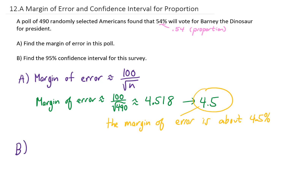Now let's find the 95% confidence interval for this survey. Our survey said that 54% of Americans were going to vote for Barney, but we had a margin of error of 4.5%. That means this 54% could be off by 4.5% in either direction.